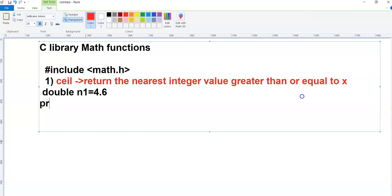Now if I say printf and you use lf to print the long float and I will say n1, so normally if I use n1 it will print the same value 4.6. However, if I am using ceil function of n1, it will return the nearest integer value. So 4.6 nearest integer value is nothing but 5.0, so it should print 5.0.